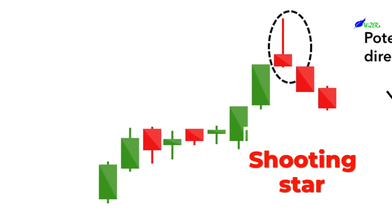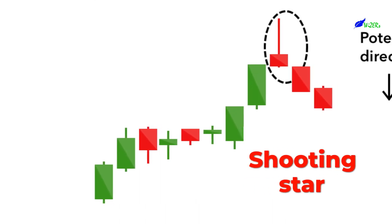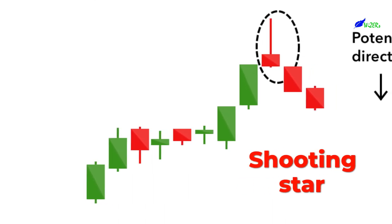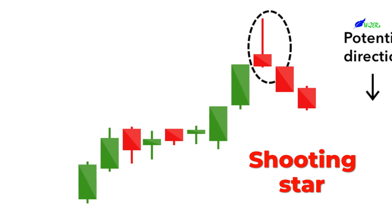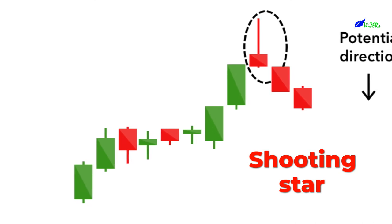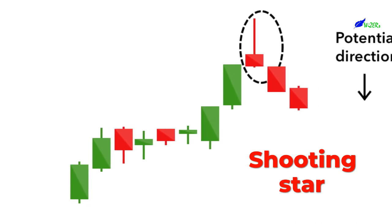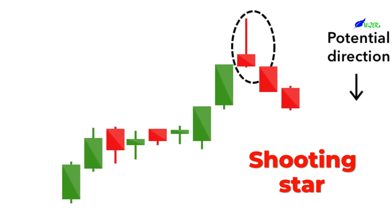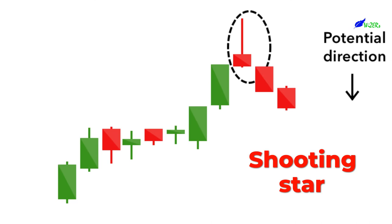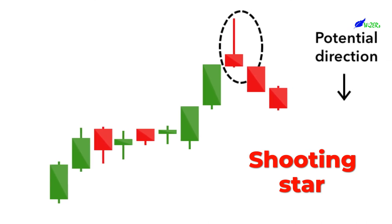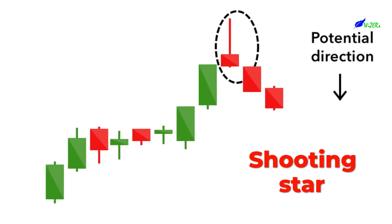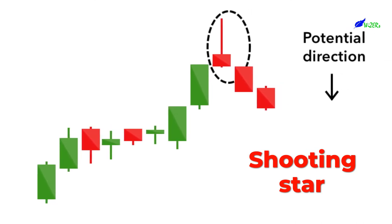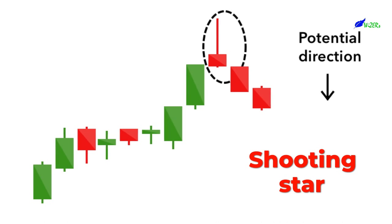Shooting Star. The Shooting Star is the same shape as the inverted hammer but is formed in an uptrend. It has a small lower body and a long upper wick. Usually the market will gap slightly higher on opening and rally to an intraday high before closing at a price just above the open, like a star falling to the ground.